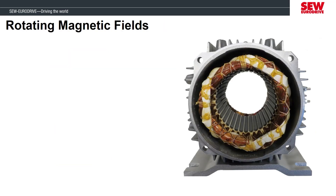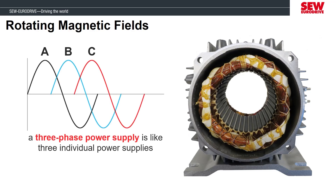The way an AC motor can work without brushes is by creating a rotating magnetic field. This was invented in the late 1800s, and early designs created the magnetic field by connecting each stator coil to different power supplies. Around the world today, three-phase power supplies are abundant, and most of the motors we sell are designed for three-phase AC power. To simplify three-phase AC power, we can think of it as three individual power supplies that output three separate sine waves shifted in time from each other.